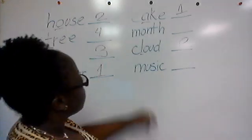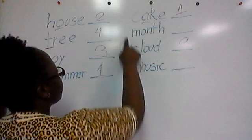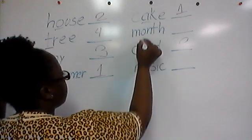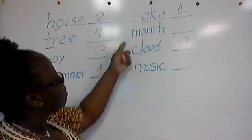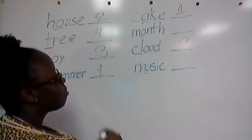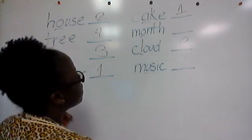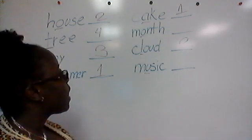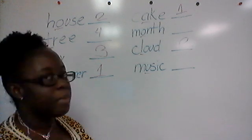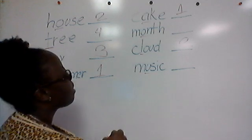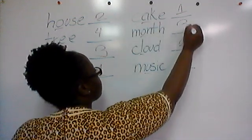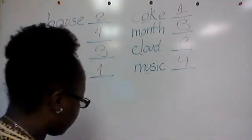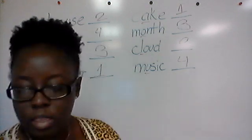Looking at the next two, they both start with M, so there are no other letters we're working with — I'm going to underline the next letters. Those words have U and O. Let's sing: A B C D E F G, Jesus died for you and me, H I J K L M N, Jesus died for sinful men, amen — O! Ding ding ding. We found O right here, so month is number three in ABC order and music is number four.